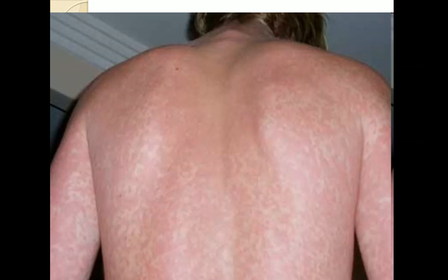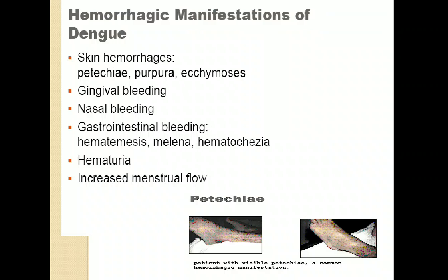This shows the appearance of rashes, which is a classic sign of dengue hemorrhagic fever. Hemorrhagic manifestations of dengue include skin hemorrhages such as petechiae, purpura or ecchymosis, gingival bleeding (bleeding from gums), nasal bleeding, GIT bleeding, hematuria, and increased menstrual flow.